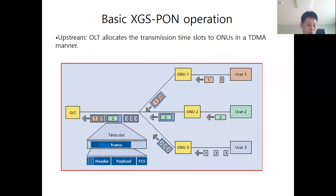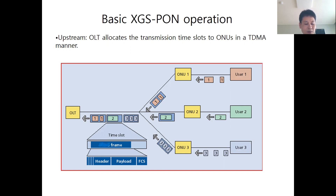In this paper, we propose a new Dynamic Bandwidth Allocation method for XGS-PON, or 10 Gbps capable symmetric passive optical network. After the first Dynamic Bandwidth Allocation with the current buffer length, the second Dynamic Bandwidth Allocation is performed with the remaining bandwidth and predicted buffer length. For the buffer length prediction, the amount of arrival packets during a new time is used. Using computer simulation, we compare the mean delay and delay variance values of the proposed method with those of other existing methods.